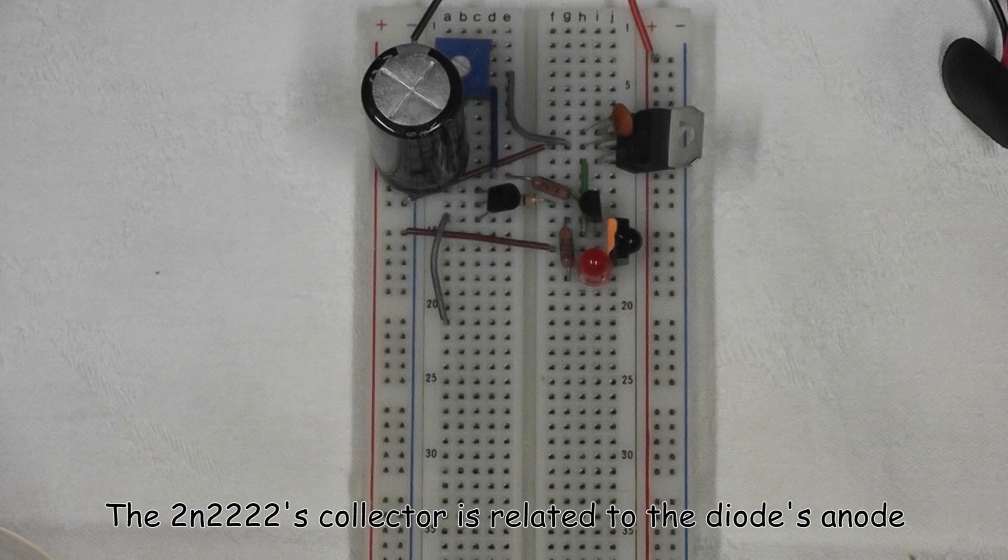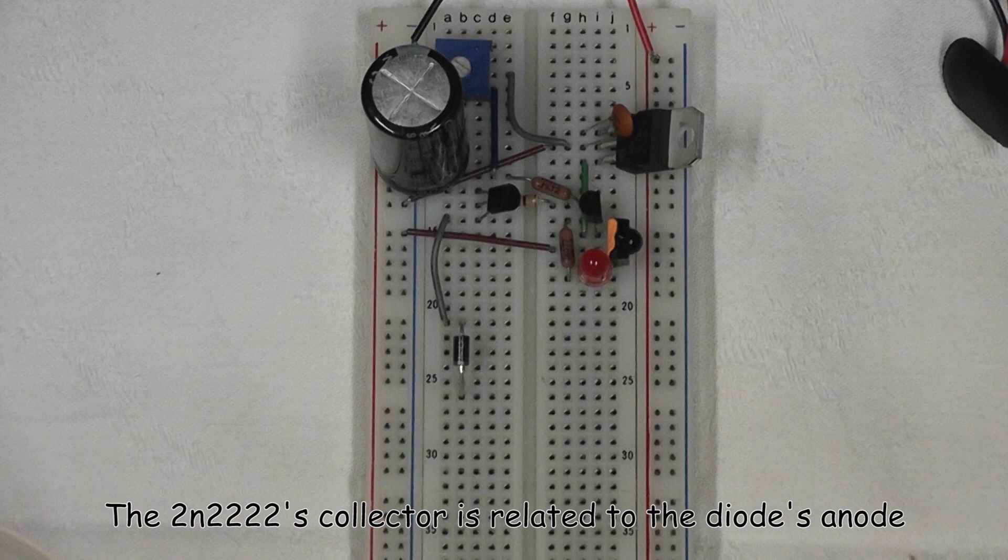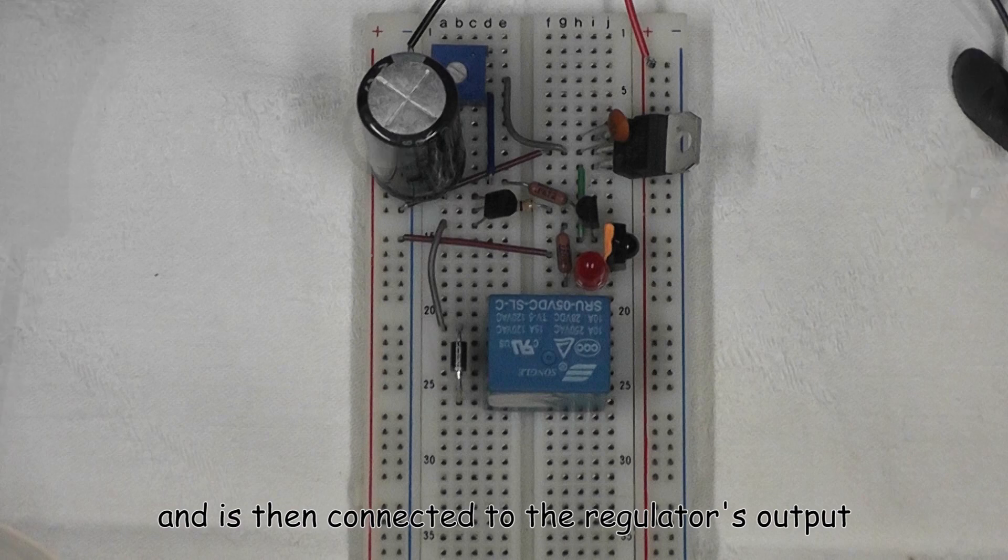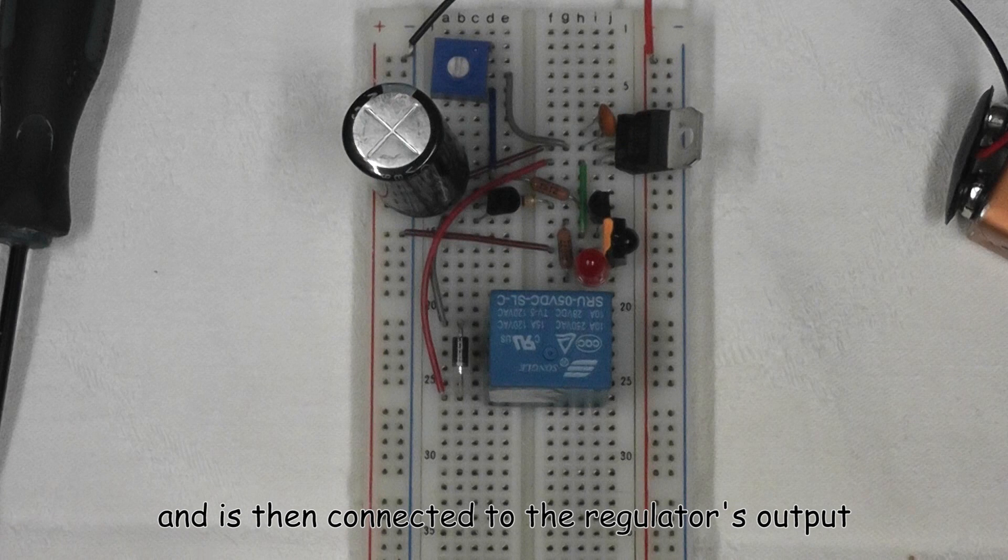The 2N2907's collector is related to the diode's anode. The relay is added in parallel to the diode and is then connected to the regulator's output.